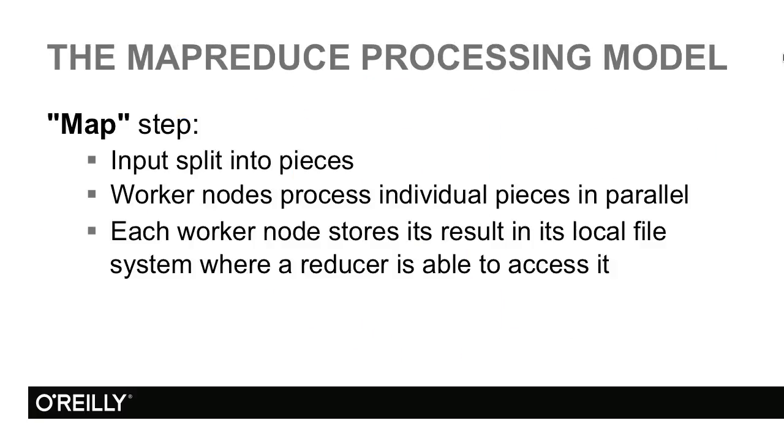Looking into the MapReduce processing model, let's summarize a couple of interesting points. First, our input is going to be split into pieces. Different machines are going to process individual pieces. These machines, we often call them worker nodes, will process these pieces in parallel. We could gain a lot of efficiency by having many machines.